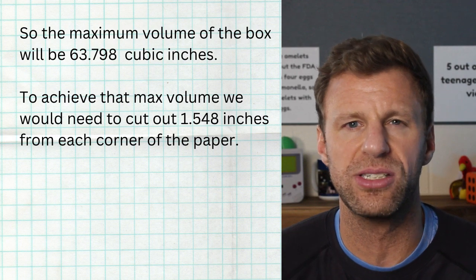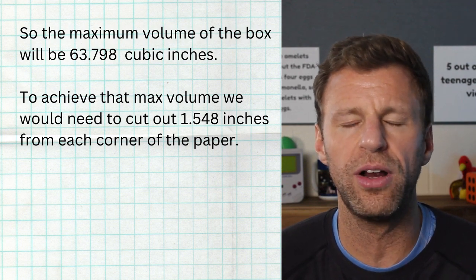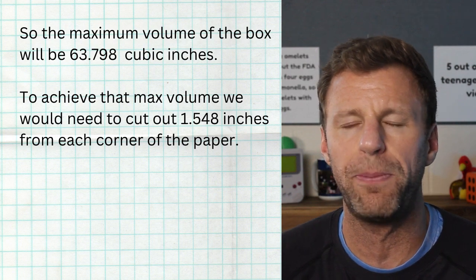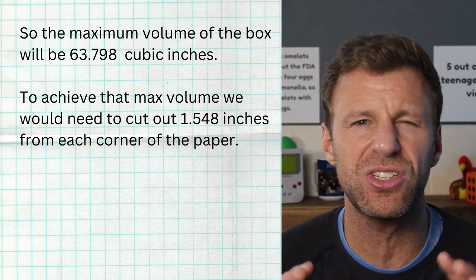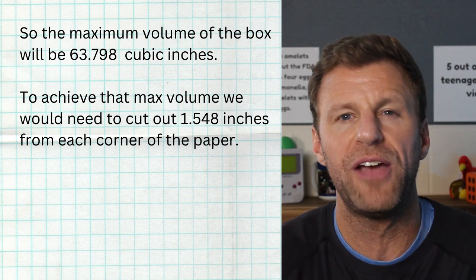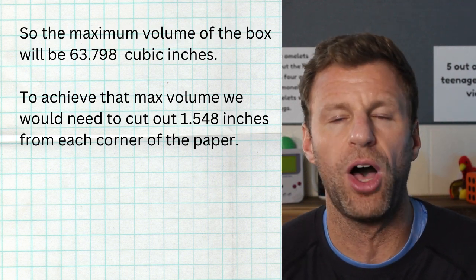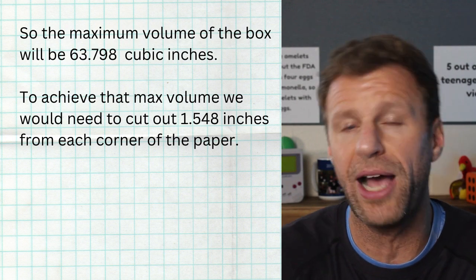So if I get a real nice, super sophisticated ruler, and I measure out 1.548 inches from each corner of my piece of paper, fold it up, I will get the absolute biggest volume box that's possible. If I cut out more, I'm going to have a taller box, but it's going to be less volume. If I cut out less, I'm going to have a shorter box, but it's going to be less volume. So that's it. That's how simple the open box problem is.